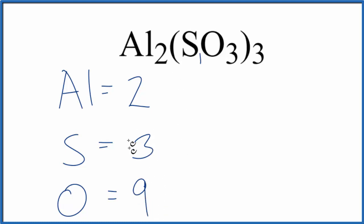And if we add these up, we get nine plus three is twelve, plus two, fourteen total atoms in Al2(SO3)3.